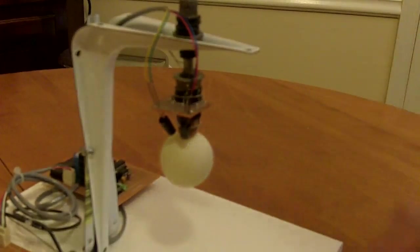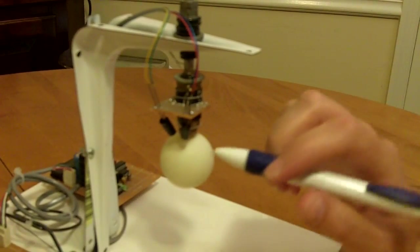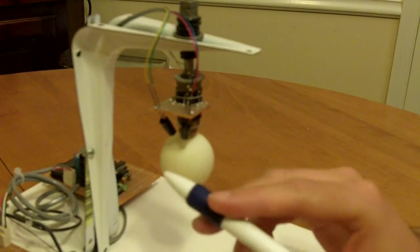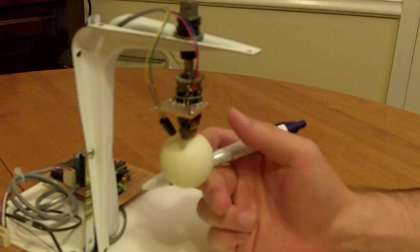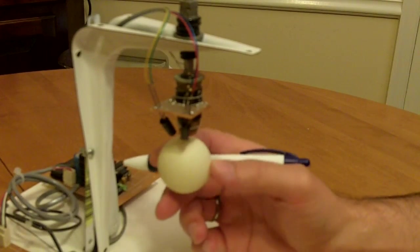Basically what I do is I send out a beam of light, shine it down on the ping-pong ball, and then it reflects back up into the receiver.